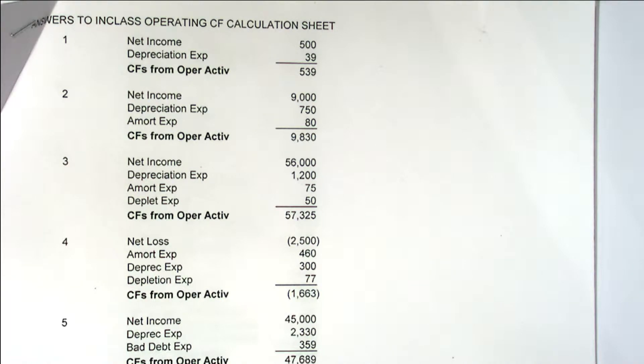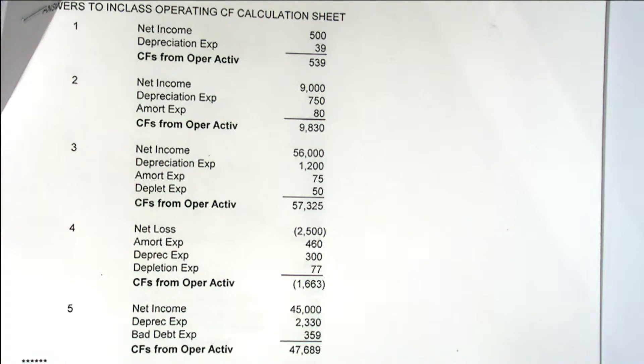Number five we don't add back salary expense. Salary expense is a cash expense. It was deducted in arriving at net income and we wanted it to be. Any questions on any of those? Remember we are calculating cash flows from operating activities. Any questions?